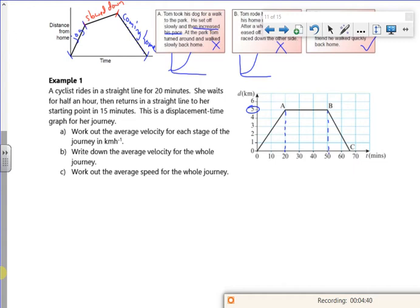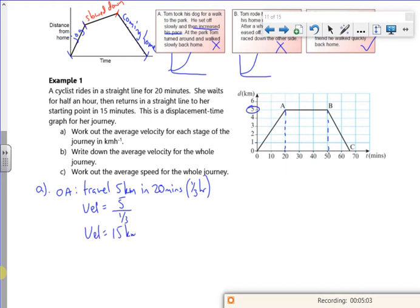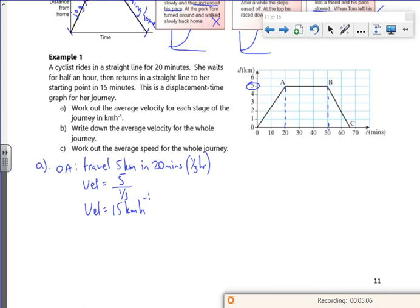Right. So I want average velocities for each stage. So from O to A, I travel five kilometers in 20 minutes, which is a third of an hour. So my velocity will be 5 over a third. So my velocity is 15 kilometers per hour. Then from A to B, I've already said it, I'm just sat there, aren't I? So I've travelled 0 km in half an hour. So in 30 minutes.